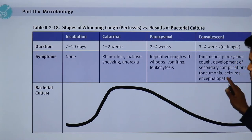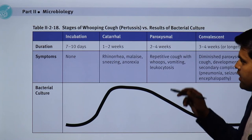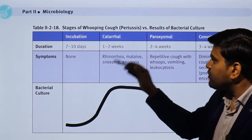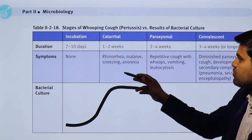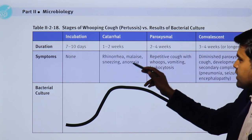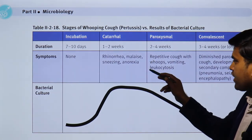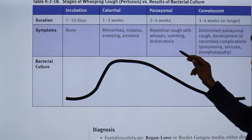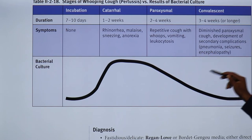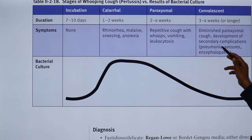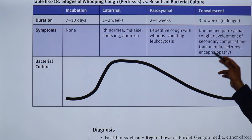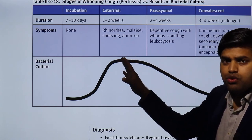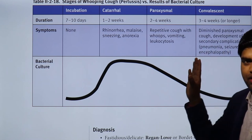About the disease cycle: there is an incubation period of 7 to 10 days. Baby gets infected, the bacteria is in stealth. After 7 to 10 days, they will develop symptoms. Initial symptoms last for 1 to 2 weeks — rhinorrhea, malaise, sneezing, and anorexia. Then they reach the paroxysmal stage where there will be repetitive cough with whooping, vomiting, and leukocytosis. In the late stage, there will be diminished paroxysmal cough and development of secondary complications like pneumonia, seizure, and encephalopathy. In the initial stage the organism is easy to grow, but in the later stage the organism becomes difficult to grow.